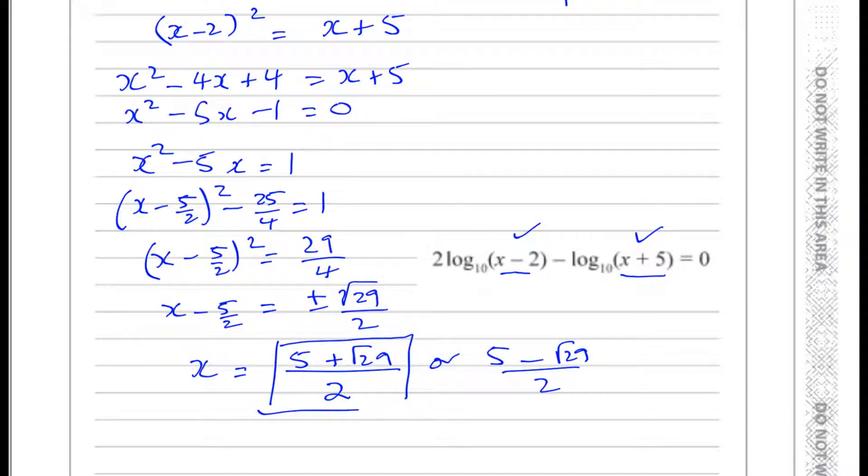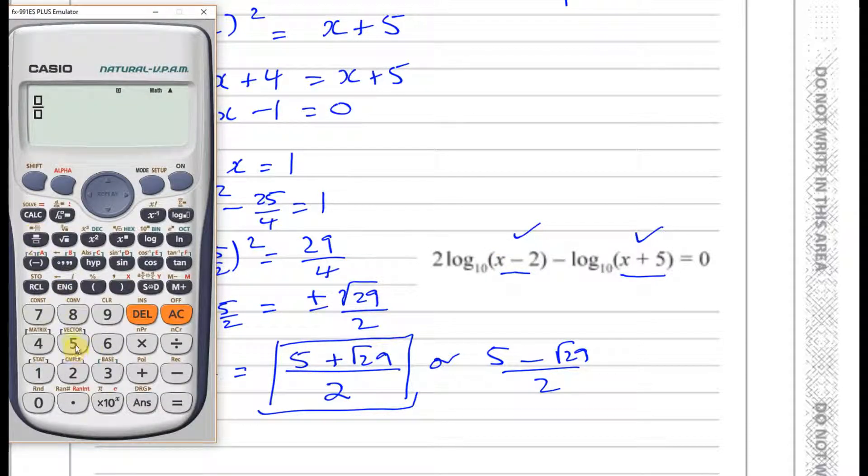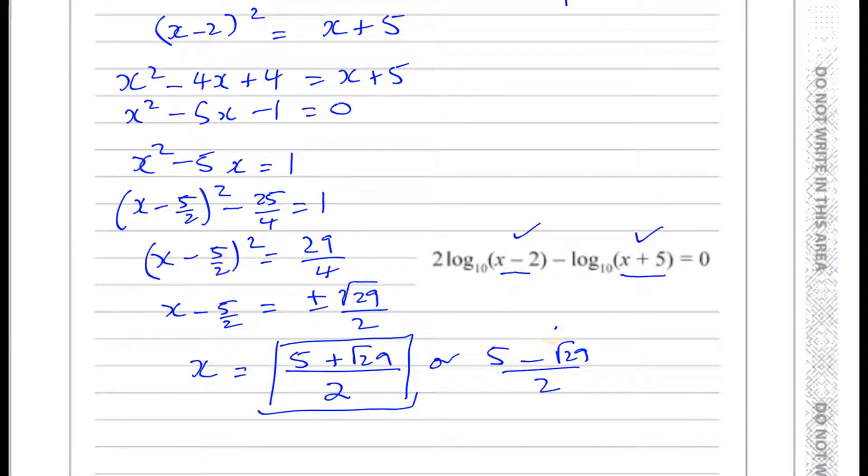But just to show you, if I put this into here, let's see what we get out. So we have (5 minus root 29) divided by 2, and then minus 2. That gives us a negative value. So if I substitute this into here, it's going to be undefined. So this is not going to be one of our solutions.